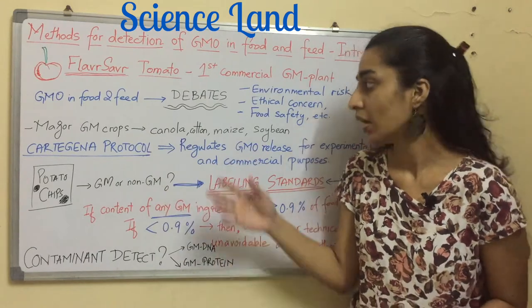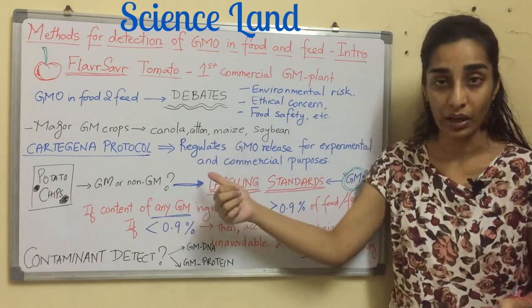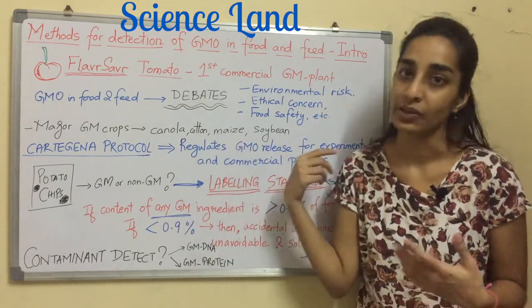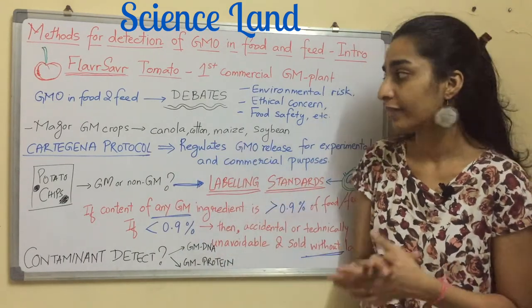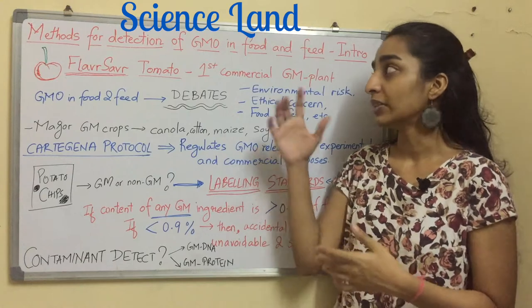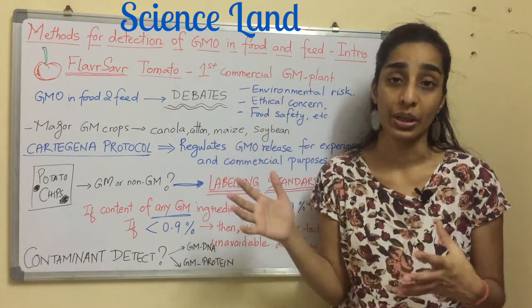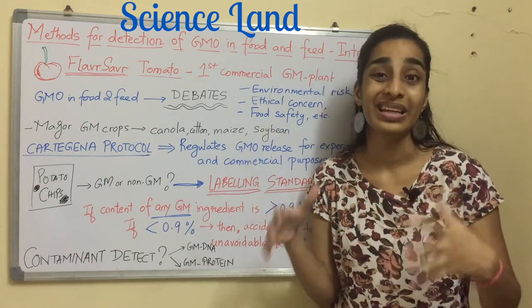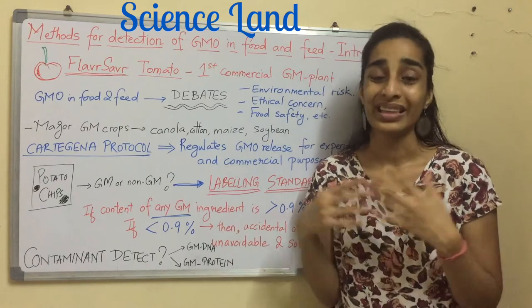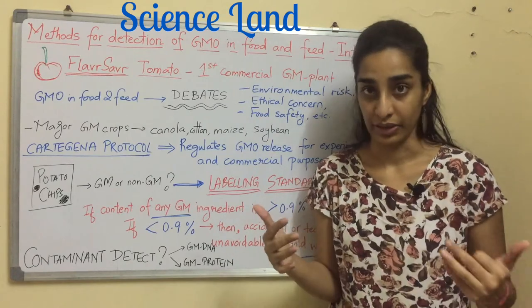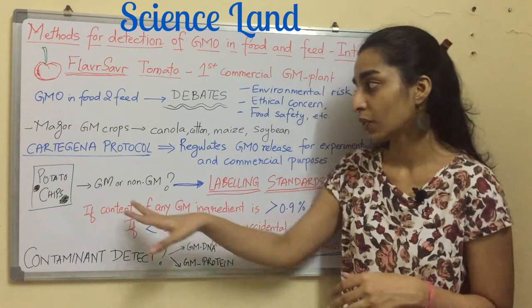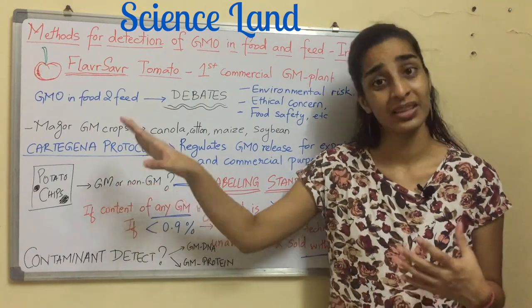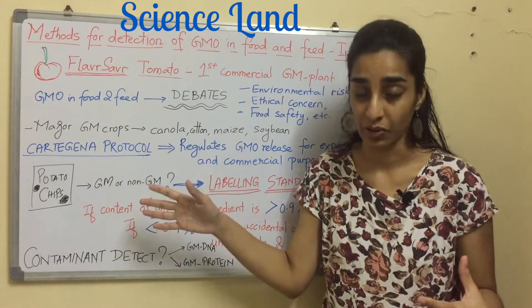Talking about GM plants, the major GM crops which are grown are canola, cotton, maize, and soybean. Since we are talking about GMOs, whenever the release of a GMO is done, that needs to be regulated.